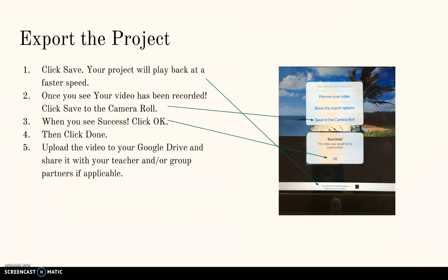In order to export your project out of the green screen app, click save. Your project will play back at a faster speed. Once you see your video has been recorded, click save to the camera roll. When you see success, click OK, then click done.